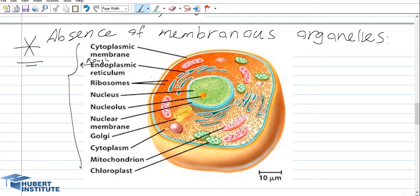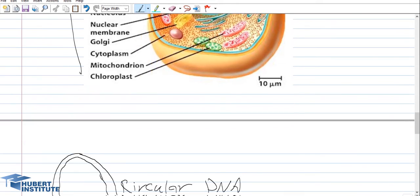Because prokaryotic cells are able to perform tasks simultaneously due to their organelles, they remain very simple and small. In contrast, eukaryotic cells contain these organelles and are therefore able to carry out tasks simultaneously.